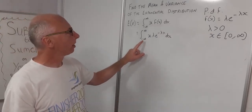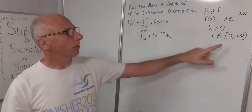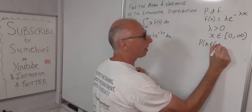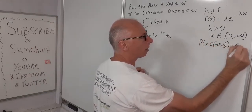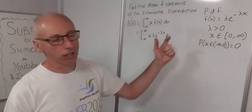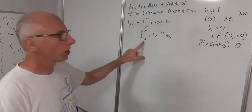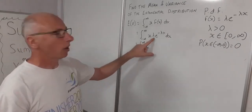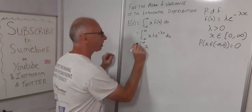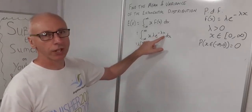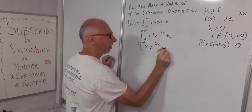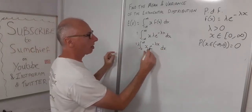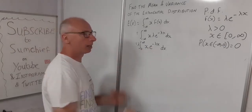Now x ranges from negative infinity to infinity, but some values don't come into it. The probability that x is in negative infinity to zero equals zero, so negative values of x do not count. This means we can change our limits of integration to go from zero to infinity, and we can bring λ out front, leaving the integral of x·e^(-λx).